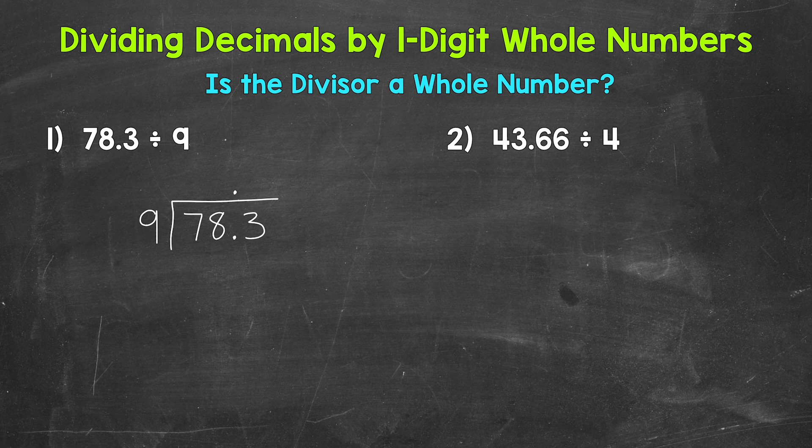Let's start with divide. So we have 7 divided by 9. How many whole groups of 9 in 7? Well, we can't do that. So we need to look at the 7 and the 8. So we have 78 divided by 9. How many whole groups of 9 in 78? Well, 8, that gets us to 72.